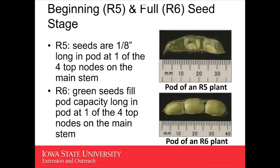At the beginning and full seed stages, we're looking at the seed inside the pod. At R6, you can definitely feel the seed size — the seed has filled up the pod cavity, and that's the indicator for R6 at one of the top four nodes. R5 is a little trickier; you're looking for a flat bean about one-eighth of an inch long. Sometimes you have to use a knife and split open that pod to actually see the bean inside and determine its size if you can't feel it.